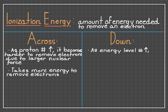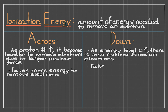And as we go down, we know that as we have increasing numbers of energy levels, it becomes a lot easier to take away electrons because of the reduced nuclear force and the larger distance from the nucleus, showing that as we go down the periodic table, ionization energy is going to ultimately decrease.